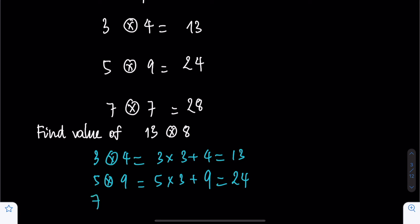And finally, 7 times 7, we should check whether it equals 7 times 3 plus 7. The answer is yes, because 7 times 3 is 21, and 21 plus 7 is 28. Therefore, this is our pattern.